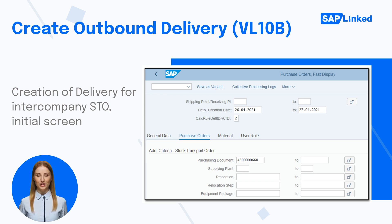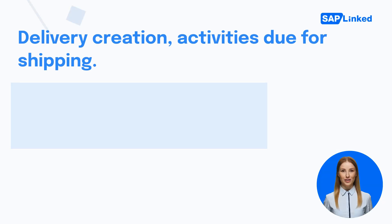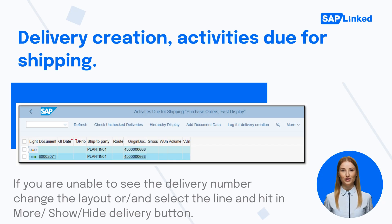Input the purchase document number and click Enter. On the next screen, select the document which you want to deliver and click Execute. Once you have clicked Execute, the delivery is created in the background. If you are unable to see the delivery number, change the layout or select the line and hit the More / Show / Hide Delivery button. Remember, to create an outbound delivery, the supplying plant must have enough unrestricted stock. You can check this in transaction MB52 or view the stock overview or ATP information in the purchase order.